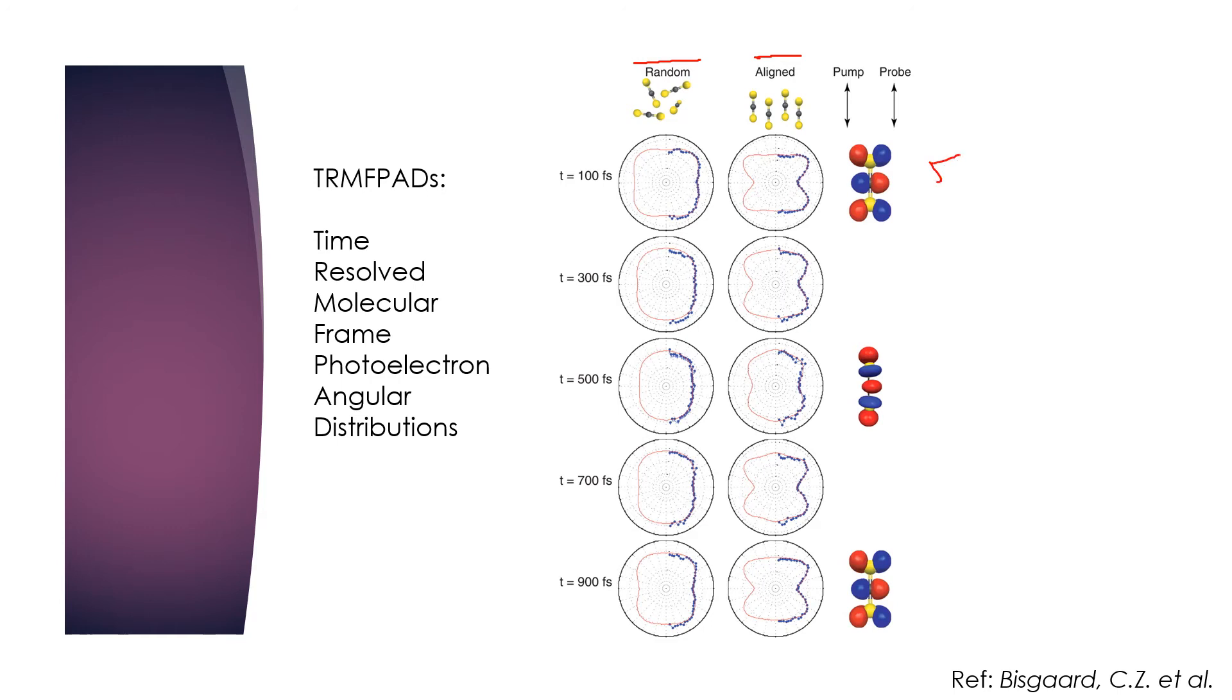This π* orbital here, and here, and this σ* orbital here. If we look at the random alignment data, we can't see much correlation between the character of these orbitals and the distribution shown here. However, the data obtained during the alignment window shows how the photoelectron emission depends on the character of the dominating electron orbitals. The shape of the obtained data seems to match the shape of the dominating orbitals.